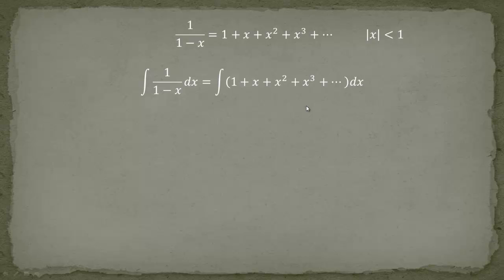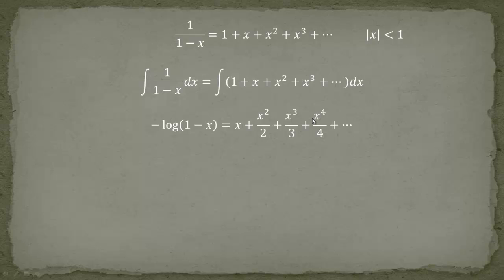On the left-hand side we get minus the logarithm of (1 minus X). On the right-hand side: 1 integrated gives X, X integrated gives X squared over 2, X squared integrated gives X cubed over 3, and X cubed gives X to the 4 over 4, and so forth. For example, if we have X to the 7, we divide it by 7.